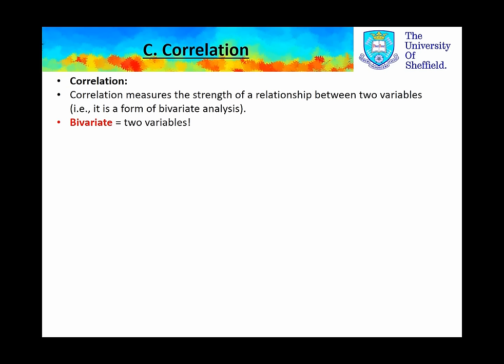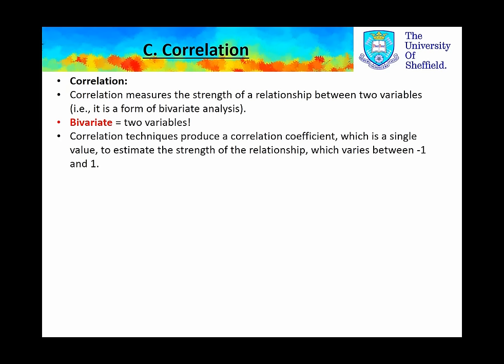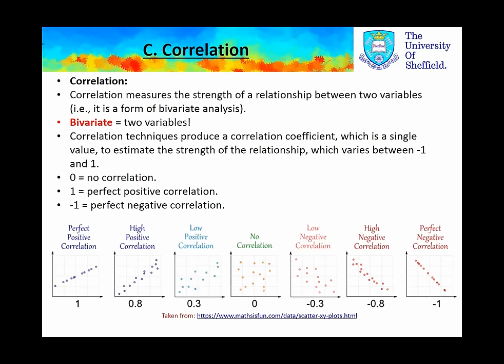We also learned about correlation, which is the measure of the strength of a relationship between two variables. A bivariate is two variables. Correlation techniques produce a correlation coefficient, which is a single value to estimate the strength of the relationship, varying between minus 1 and 1. Zero equals no correlation, 1 is perfect positive correlation, and minus 1 is perfect negative correlation, varying as with the patterns shown on screen.